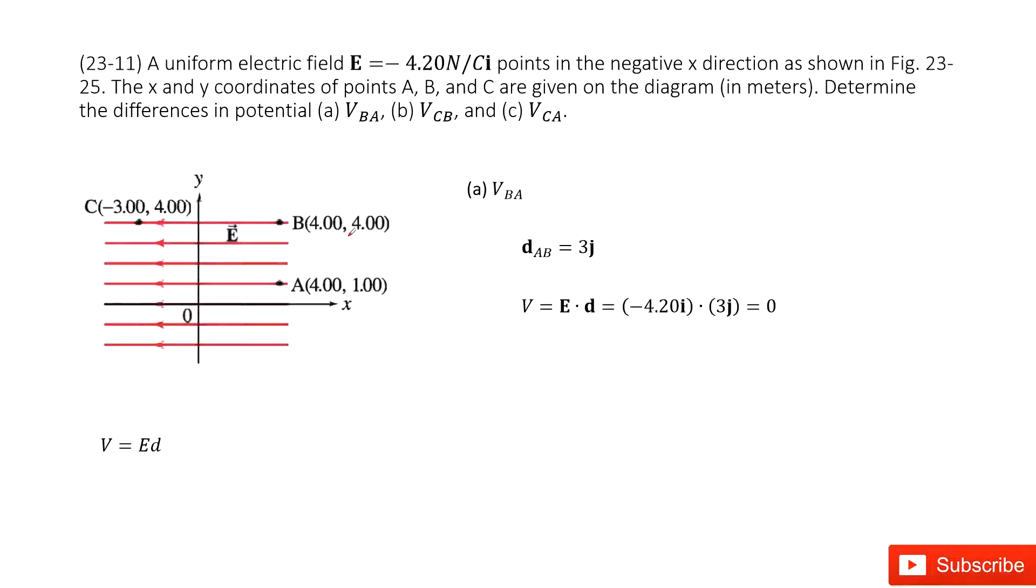Chapter 23 is about electric potential. We can see there we have a uniform electric field. This is a vector. Electric field vector E is given, pointing in the negative x direction. And now we have A, B, C, three points.